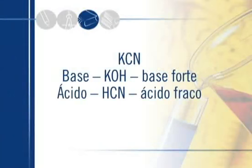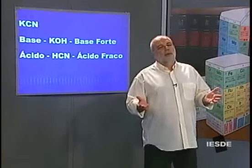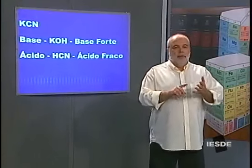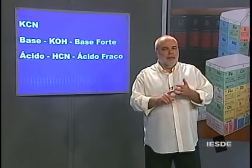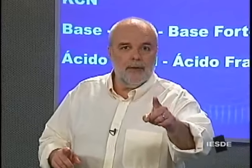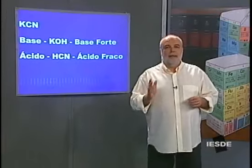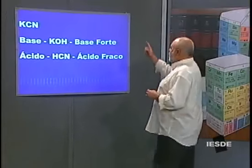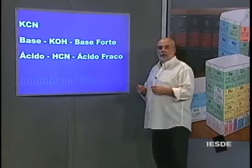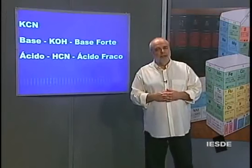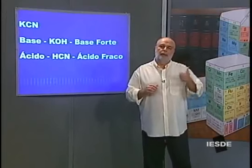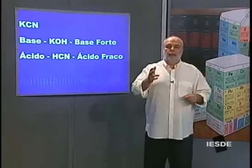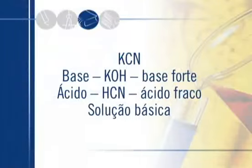O ácido de origem é o HCN. HCN é um ácido fraco: é um hidrácido, mas não é HCl, nem HBr, nem HI, nem HF — portanto é fraco. A base é forte, o ácido é fraco. Há hidrólise? Sim. Quem predomina? Predomina a base. Se predomina a base, a solução vai ser básica, com pH maior do que 7.